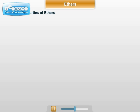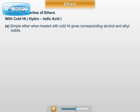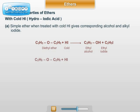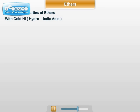Next, the chemical properties of ethers. First, the action of cold HI (hydroiodic acid). While doing the reaction of ether with cold HI, four points are to be considered. Number one: simple ether when reacted with cold HI gives the corresponding alcohol and alkyl iodide.